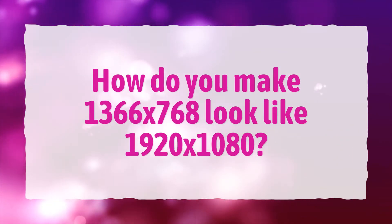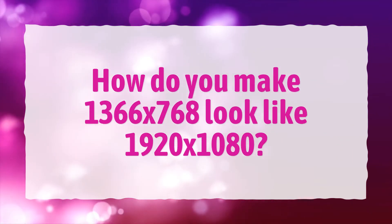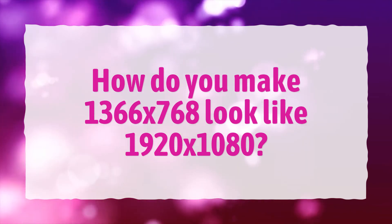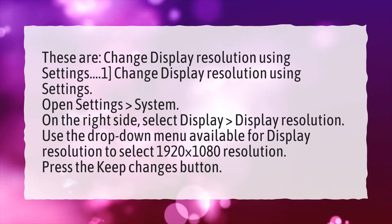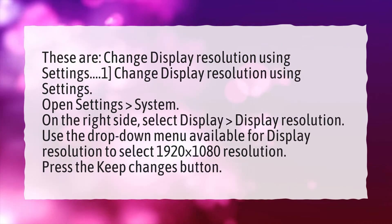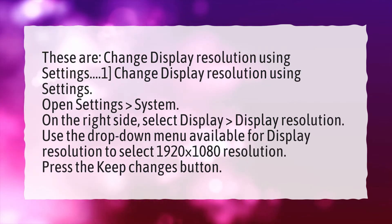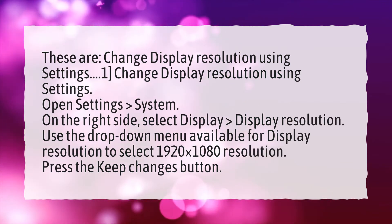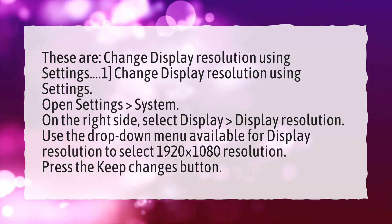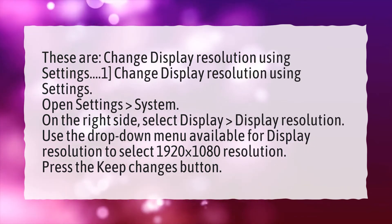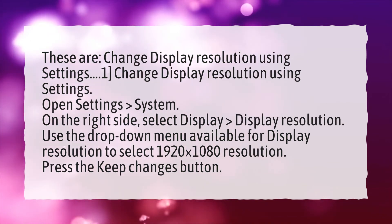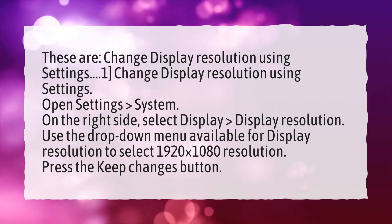How do you make 1366 by 768 look like 1920 by 1080? To change display resolution using Settings: open Settings, then System. On the right side, select Display. Under Display Resolution, use the drop-down menu to select 1920 x 1080 resolution, then press the Keep Changes button.